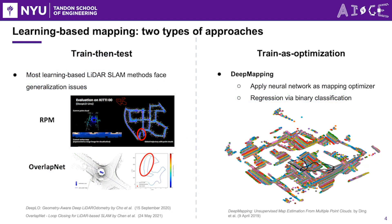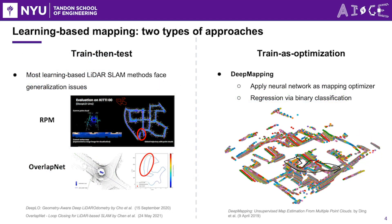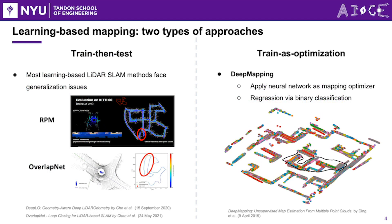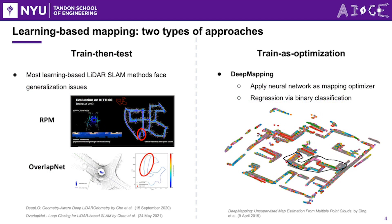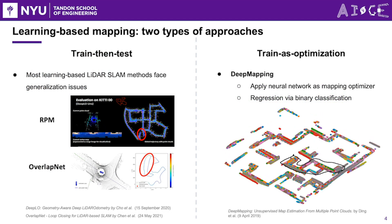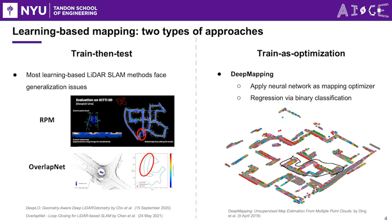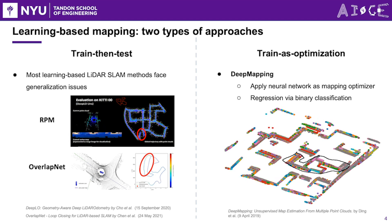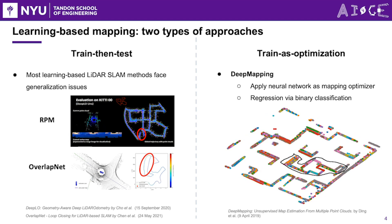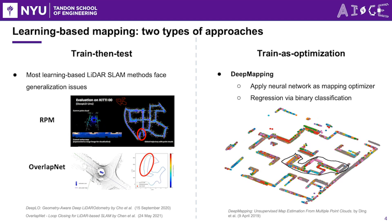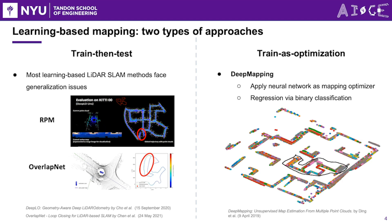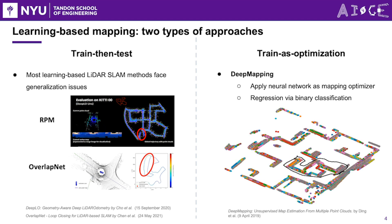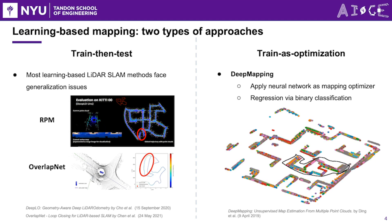This brings our attention to learning-based mapping approaches. Let's explore two main types. The first type is the train-then-test approach. In this approach, LiDAR SLAM methods are trained on a specific dataset and tested on another. However, they often face challenges with generalization to new, unseen data.